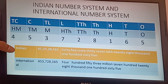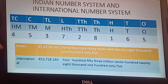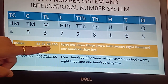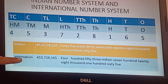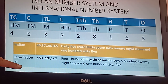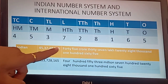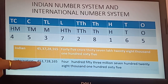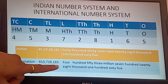Now we will see how to write a number in Indian number system and international number system. First, we put the commas. In Indian number system: after the first 3 digits, then after every 2 digits — 3, 2, 2, 2. In international system: 3, 3, 3. If we place the commas correctly, we will be able to write numbers correctly. In Indian system: 45 crore 37,28,165. In international number system: 453,728,165.